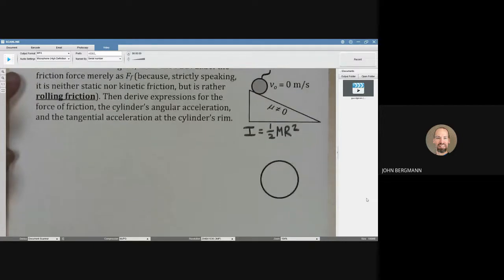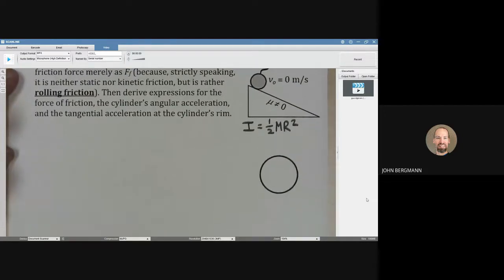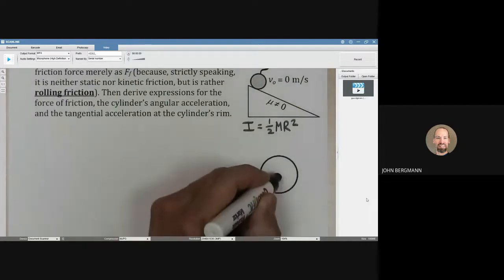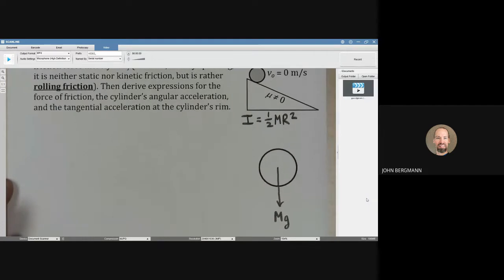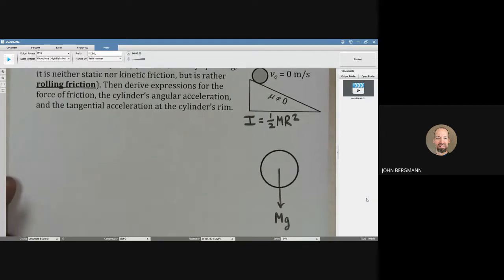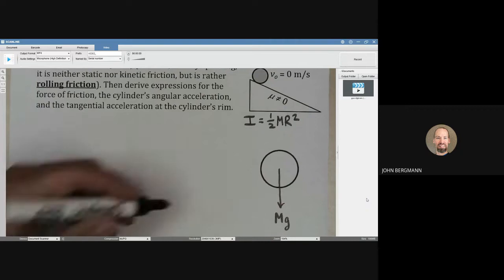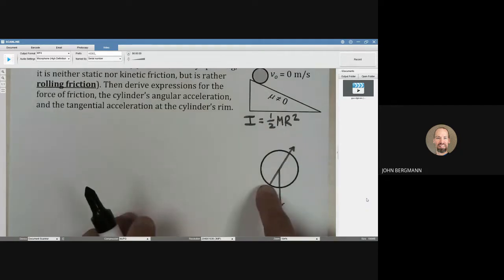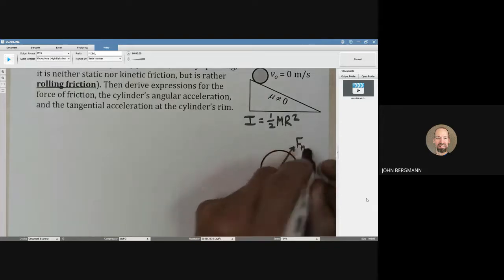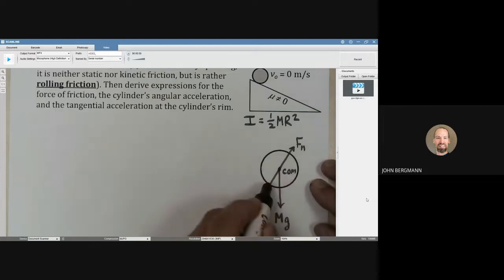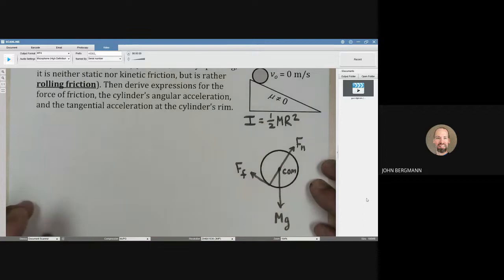If we're going to do anything with Newton's second law, we need to draw a free body diagram. As we mentioned in the earlier video, we need to draw the forces where they act. The weight will act at the center of mass of the cylinder. The normal force acts where the cylinder touches the surface. Here is our center of mass, and the friction force is going to act this way. We'll call it F sub F.